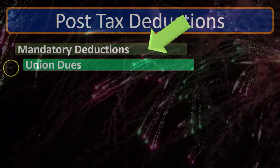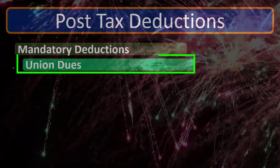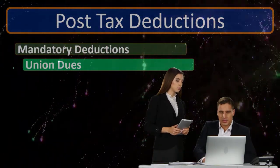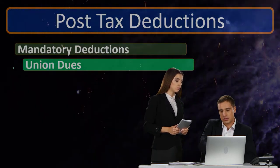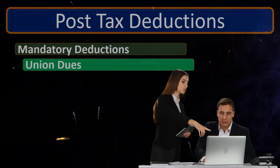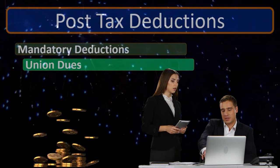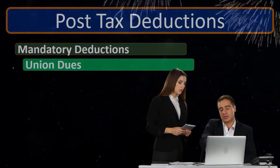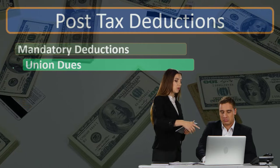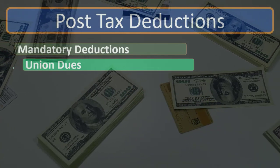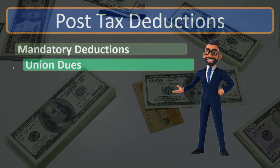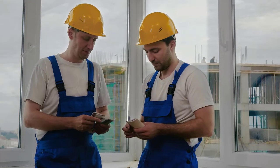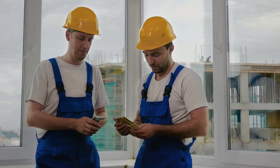Mandatory deductions are going to be things like union dues. Depending on what the union agreements are, if it's in the contract that we've got to deduct the union dues, then those are mandatory deductions. They're not going to lower the taxable income — paying union dues typically has no effect on federal income tax, Social Security, Medicare, or state tax — but it will decrease the net check for the employee. The employer is required to take the money from the employee's gross wages and pay it to the union.